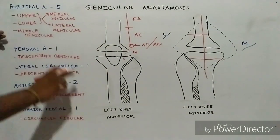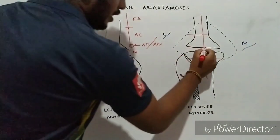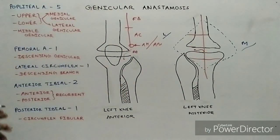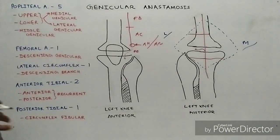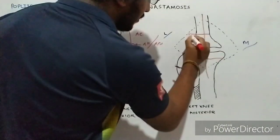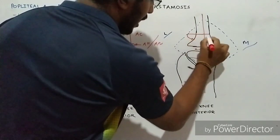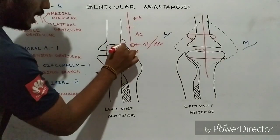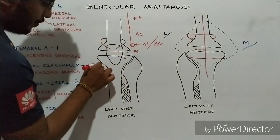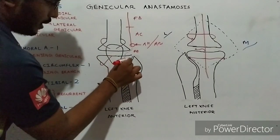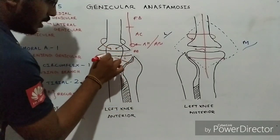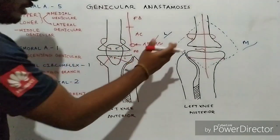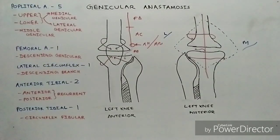Finally, the middle genicular branch is an important branch that supplies the cruciate ligaments of the knee joint. These five genicular branches come into the anterior aspect of the knee joint and form the anastomosis in front of the patella. That's all about the genicular branches from the popliteal artery.